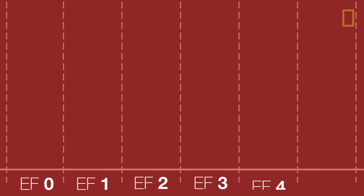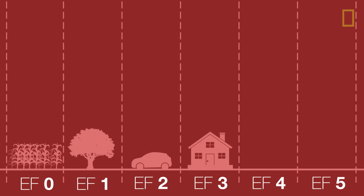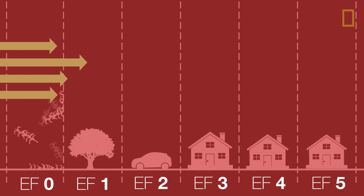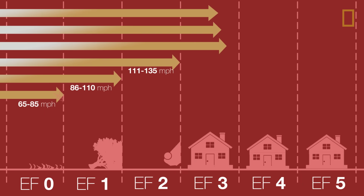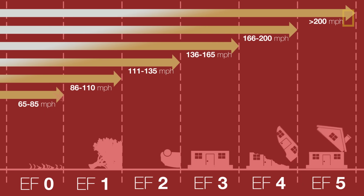We measure the amount of damage to land and property using the EF scale, which ranks tornadoes on six different levels — from zero, a heavy breeze that can uproot crops, to level five, enough wind to pick up a house.